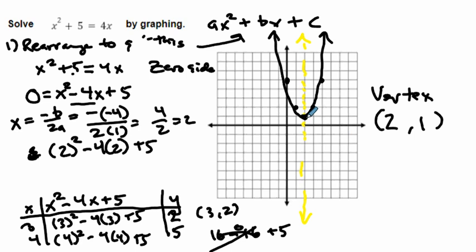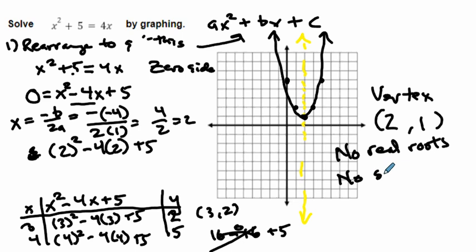The solution is where the parabola crosses the x-axis, but if you look at this, it doesn't cross the x-axis at any point and it never will. So what we call this is: there are no real roots. That means practically there is no solution. Hopefully going over this again is helping. We've got one more example coming up and then we'll be done with this lesson.